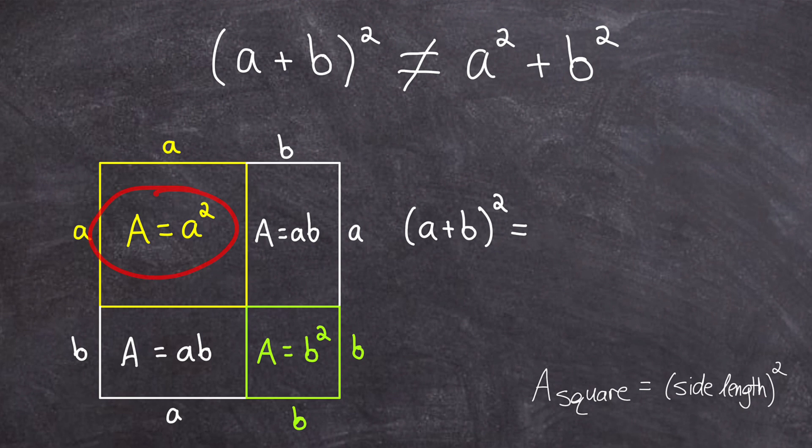It's equal to a squared plus b squared plus both of these rectangles that have areas of ab, which means the total area I could write as a squared plus 2ab plus b squared.